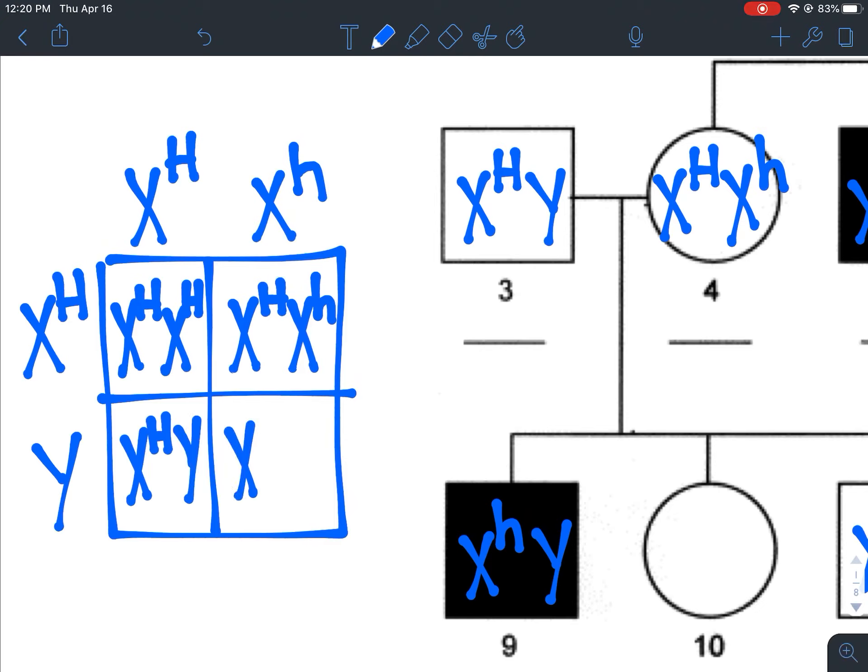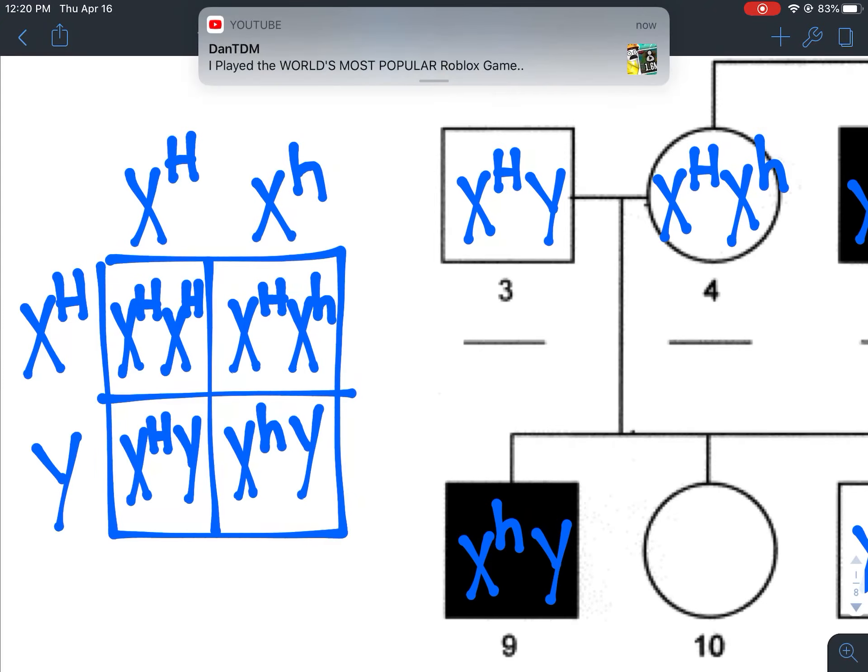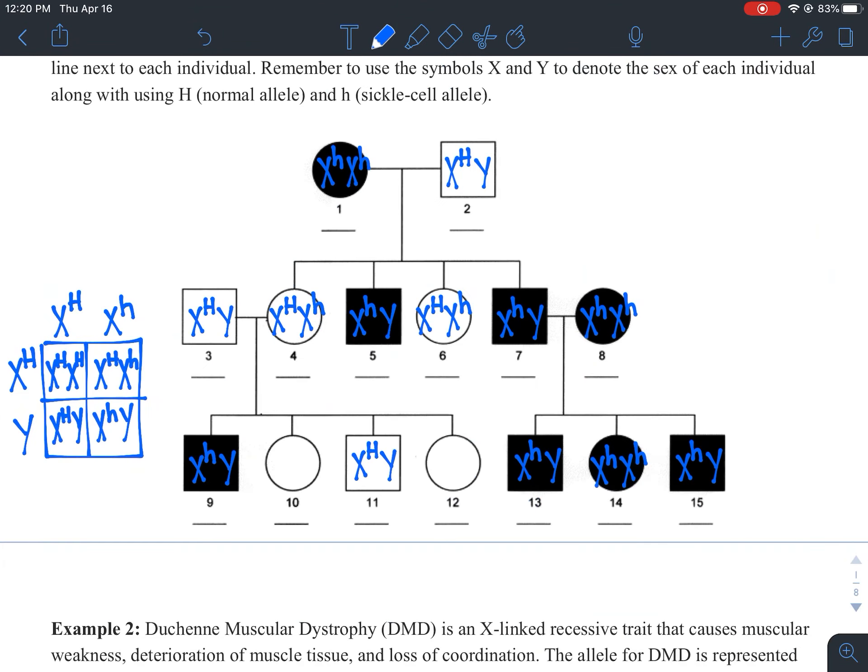This is showing what could potentially happen. It's not necessarily giving you what will happen. So in this, it's showing us that we could have a son that would have the disorder. And actually, that is shown in individual number nine. And this one down here is showing us an individual that does not have the disorder. And that's actually showing up in individual 11.